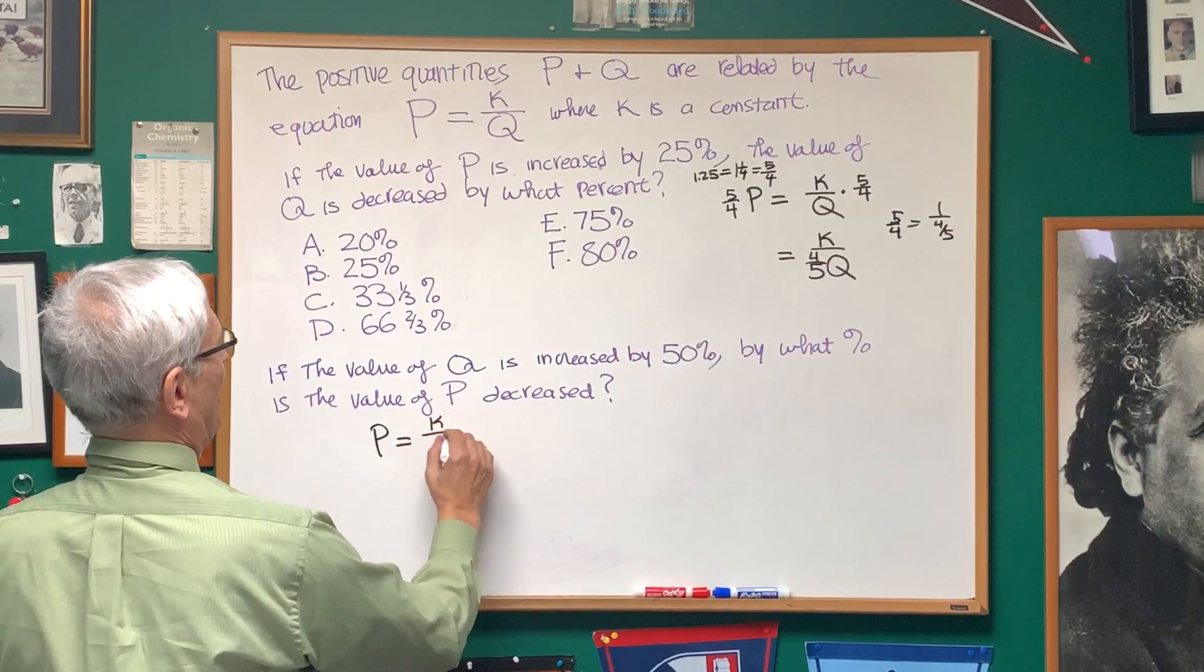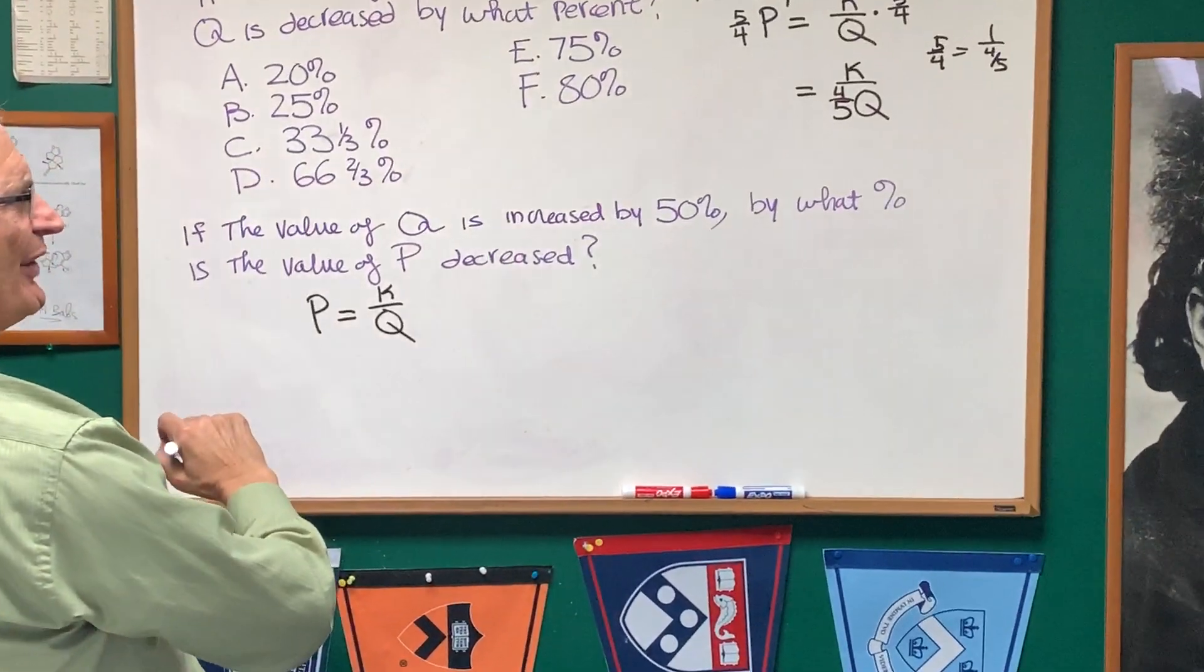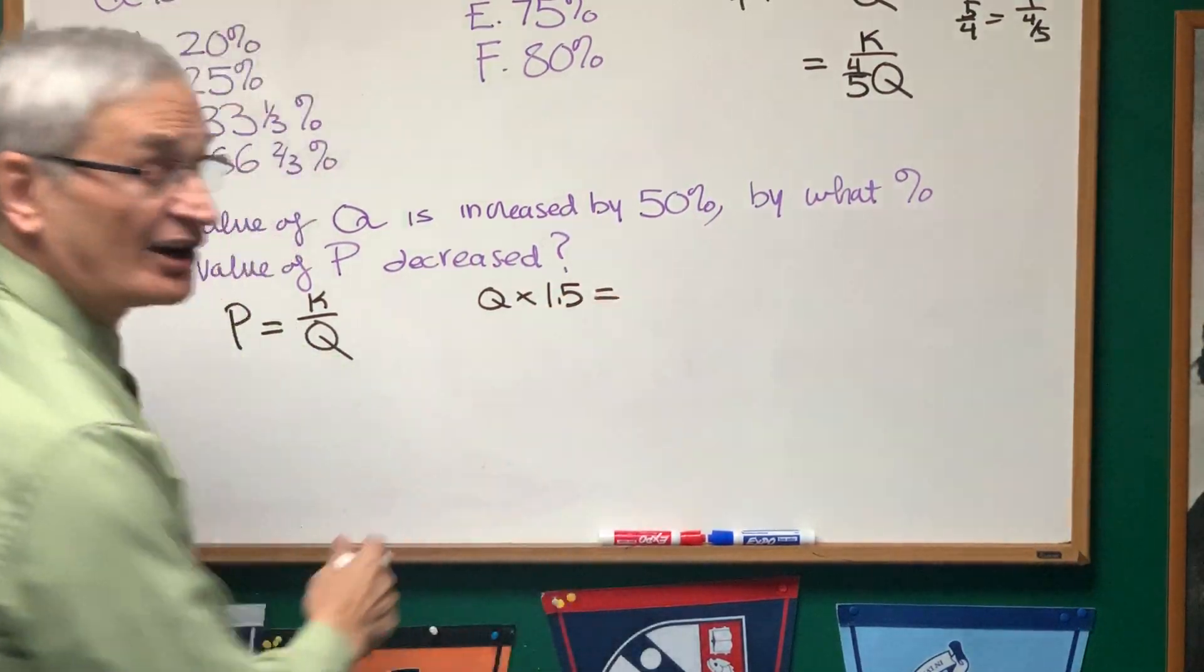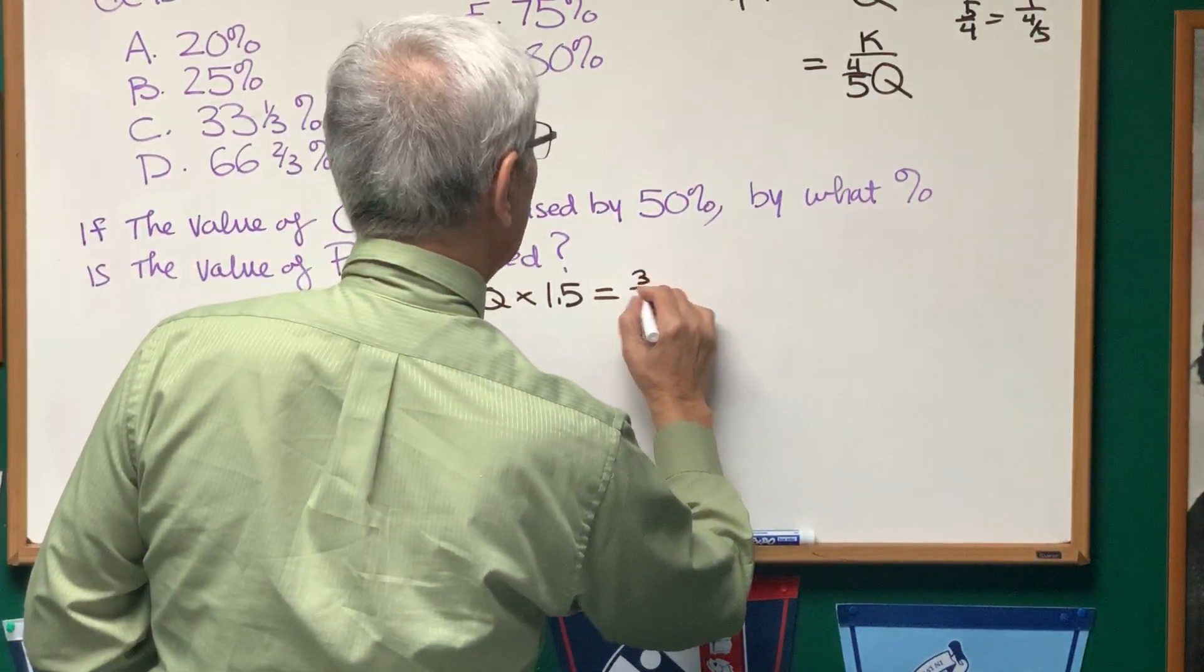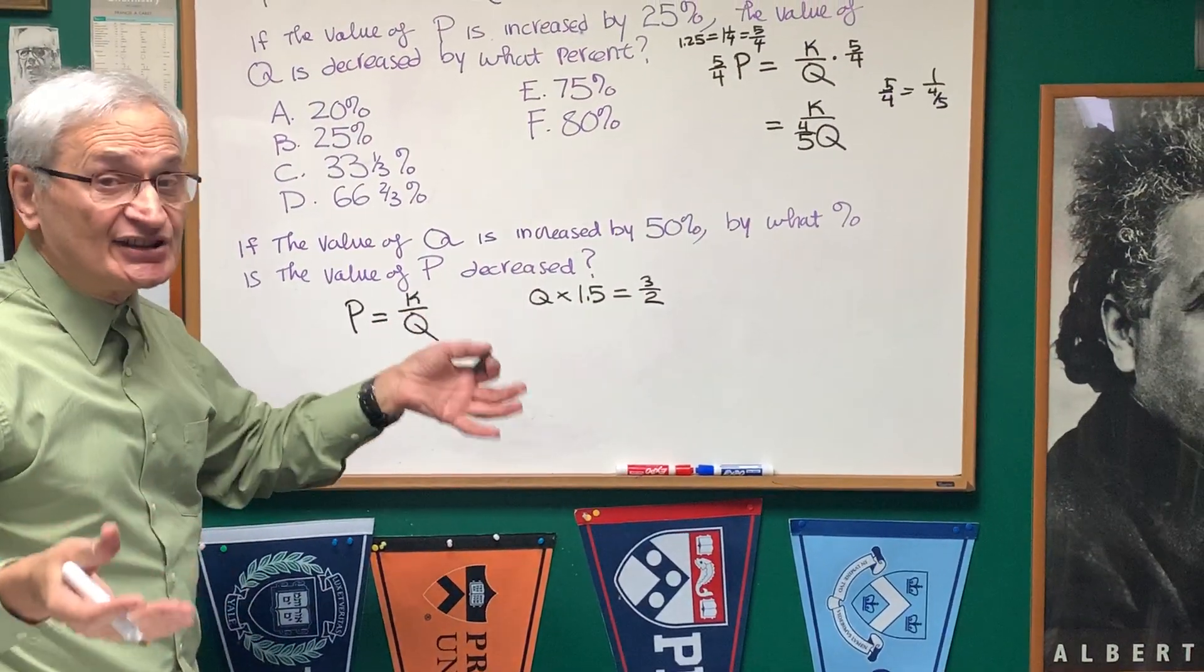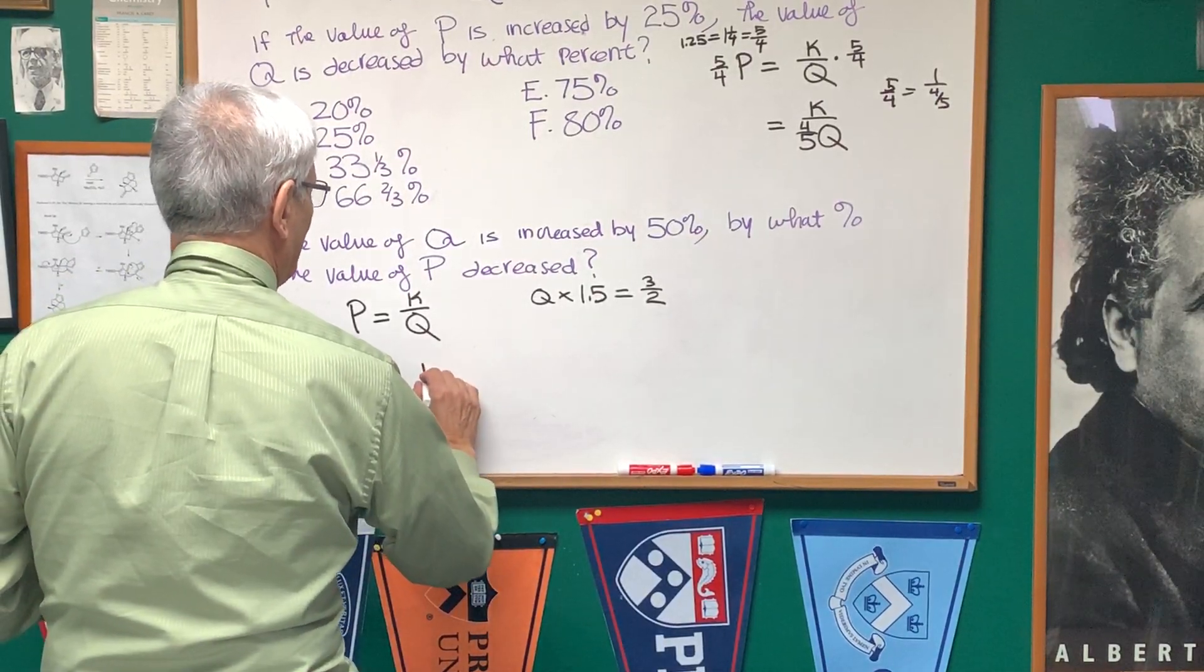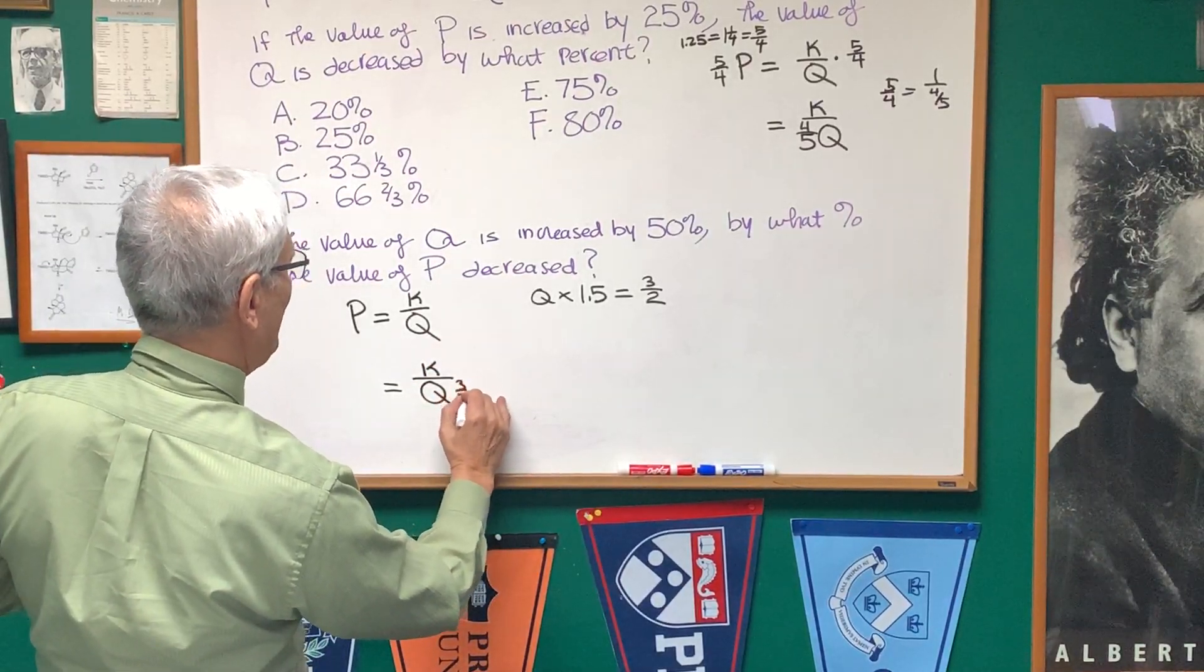P is equal to K divided by Q. The value of Q is increased by 50%. Well, that means we're going to multiply Q times 1.5, 150%, which is more conveniently represented by 3 halves. Because we're dealing with fractions here, it's easier to represent these expressions in fraction form. So, we're going to rewrite this. We're going to multiply the left side of the equation, the denominator, by 3 halves.